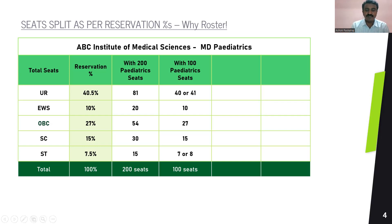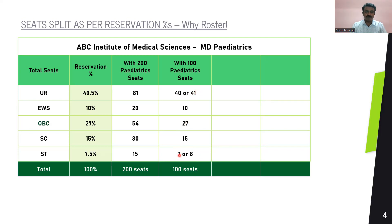Now let's take a scenario where I have 100 seats — this is where the first level of confusion comes up. I have a problem because 40.5% is supposed to be under UR, but I can't allocate 40.5 seats. I have to go with either 40 or 41. For EWS, OBC, and SC, they are whole numbers: 10, 27, and 15 seats. But for ST, there is a 7.5% reservation, so I have to go with either 7 or 8 seats. The logical thing is to provide 41 seats for UR and 7 seats for ST this year, and the next year provide 40 seats for UR and 8 seats for ST. Between the two years, 41 plus 40 under UR makes 81 seats out of 200, and 8 plus 7 under ST makes 15 seats out of 200, compensating across two years.